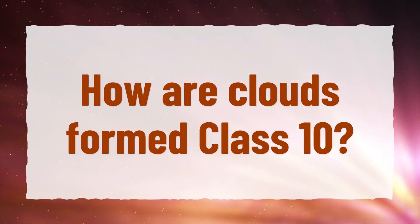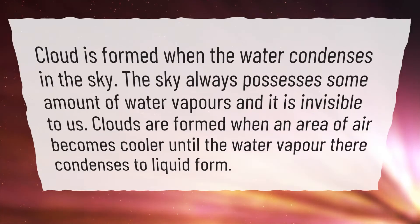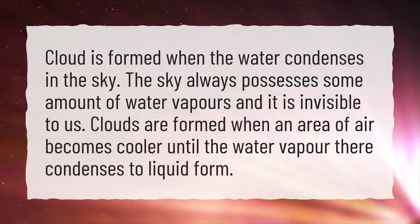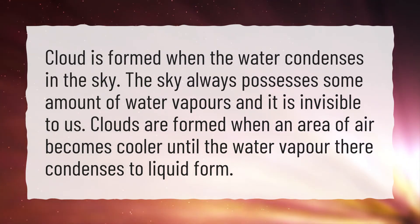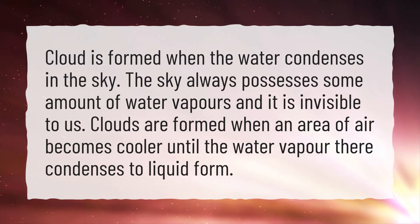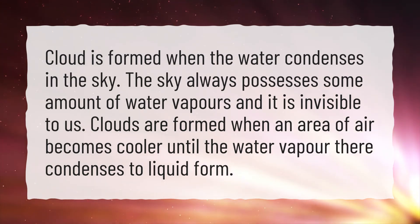How are clouds formed — class 10? Cloud is formed when the water condenses in the sky. The sky always possesses some amount of water vapors and it is invisible to us. Clouds are formed when an area of air becomes cooler until the water vapor there condenses to liquid form.